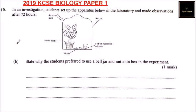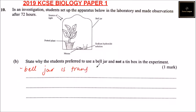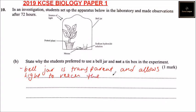Part B of question number 10 — we have the same setup. We are told: state why the student preferred to use a bell jar and not a tin box in the experiment. One reason is that the bell jar is transparent and allows light to reach the plant for photosynthesis.